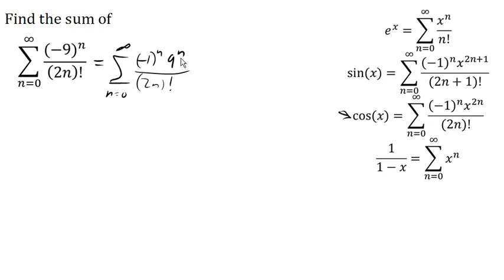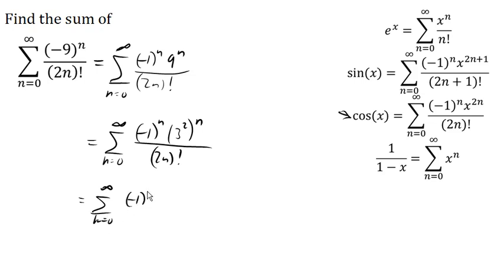Now, we really need an x to the 2n, and so we can remember that 9 is 3 squared. So we can write this as negative 1 to the n, 3 squared to the n, which becomes negative 1 to the n, 3 to the 2n, multiplying the exponents there, over 2n factorial.